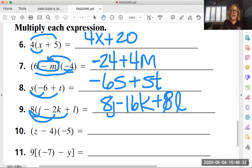Okay number ten: the quantity of z minus four times negative five. So negative five times z is negative 5z and negative five times negative four is positive 20.